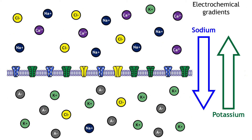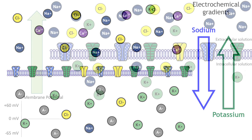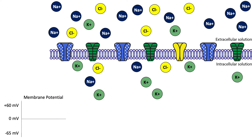These ion and concentration differences lead to varying degrees of electrochemical gradients in different directions depending on the ion in question. For example, the electrochemical gradients for sodium and potassium drive ion flow in different directions. If the membrane is permeable to sodium, ions will flow inward. If the membrane is permeable to potassium, ions will flow outward. The neuron's membrane potential at which the electrical and concentration gradients for a given ion balance out is called the ion's equilibrium potential.